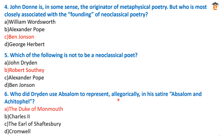Question number six: who did Dryden use Absalom to represent allegorically in his satire 'Absalom and Achitophel'? This is a political satire and allegorical poem by John Dryden. The answer is the Duke of Monmouth — Absalom was representing the Duke of Monmouth in Dryden's satirical poem 'Absalom and Achitophel.'